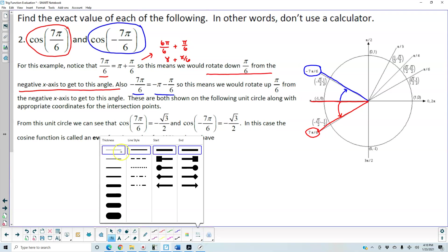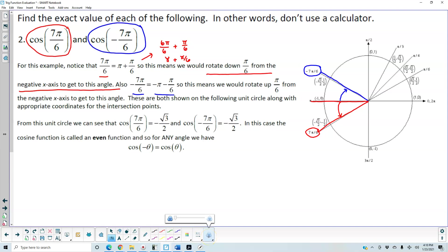So from this unit circle, we want to find what is the cosine of 7π over 6. Well, cosine of 7π over 6 is the x-coordinate of that angle. So therefore, we get negative square root of 3 over 2.